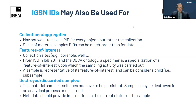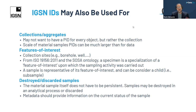We don't just have to think about individual samples — we could be thinking about collections or aggregates. You may not want a persistent identifier for every object, but rather the collection. So you need to think about granularity, especially since the scale of material samples can be much larger than that of data. IGSN IDs can also be used for what we call features of interest — basically collection sites. In the geosciences, that might be a borehole or a well — the place where sampling took place, not what you take back to the lab. A specimen is a specialization of this feature of interest upon which the sampling activity was carried out, and the sample is a representative of that feature of interest and can be considered a child or subsample of it.